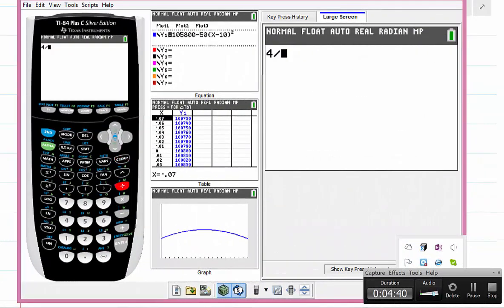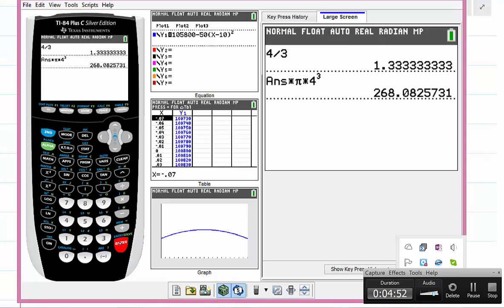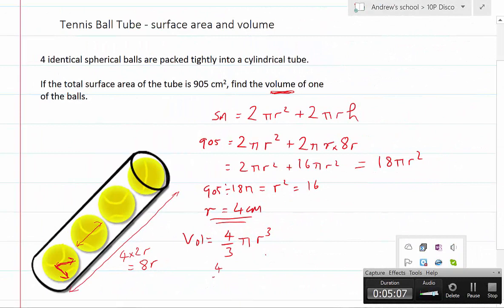4 divided by 3 times π times 4³ gives us 268. So 4/3 times π times 4³ is 268 and the units are of course cm³.